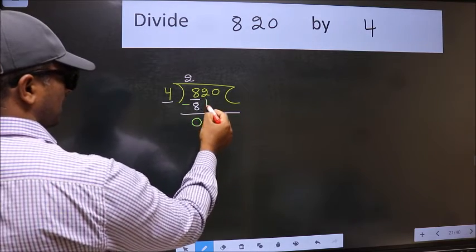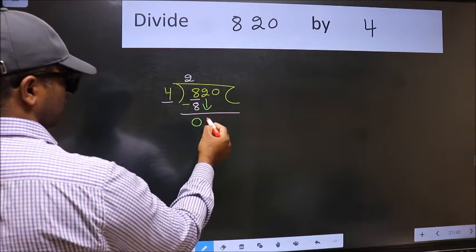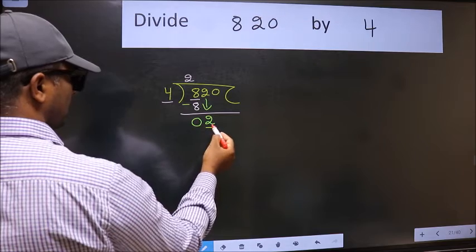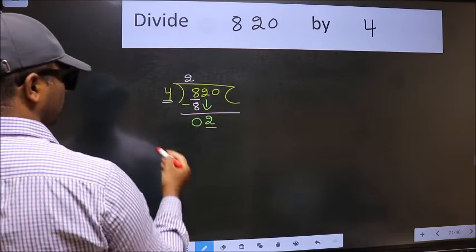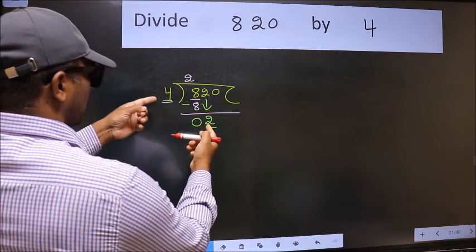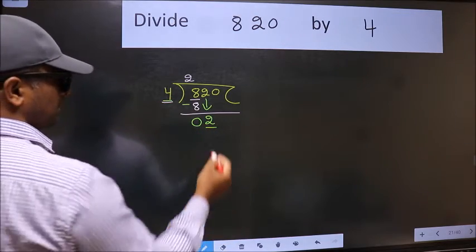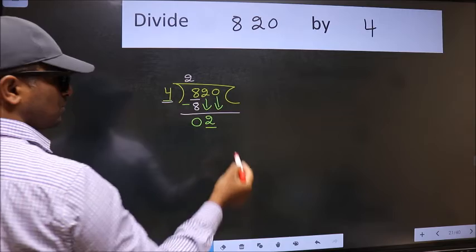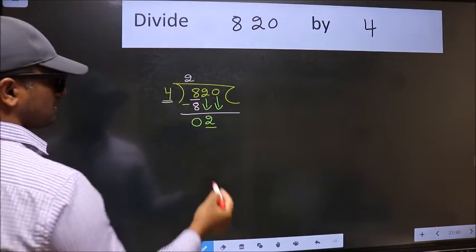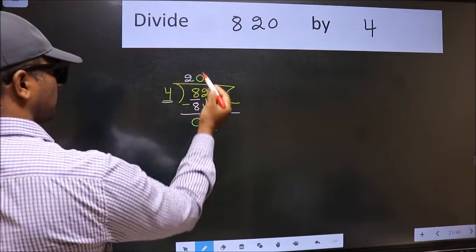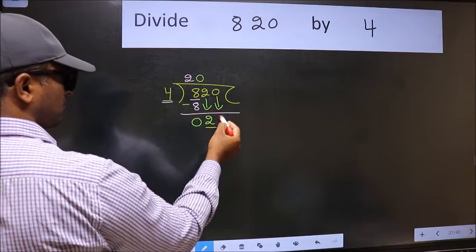After this, bring down the beside number. So, 2 down. Now here we have 2 and here 4. 2 is smaller than 4, so we should bring down the second number. And the rule to bring down the second number is we should put 0 here. Then only we can bring this number down.